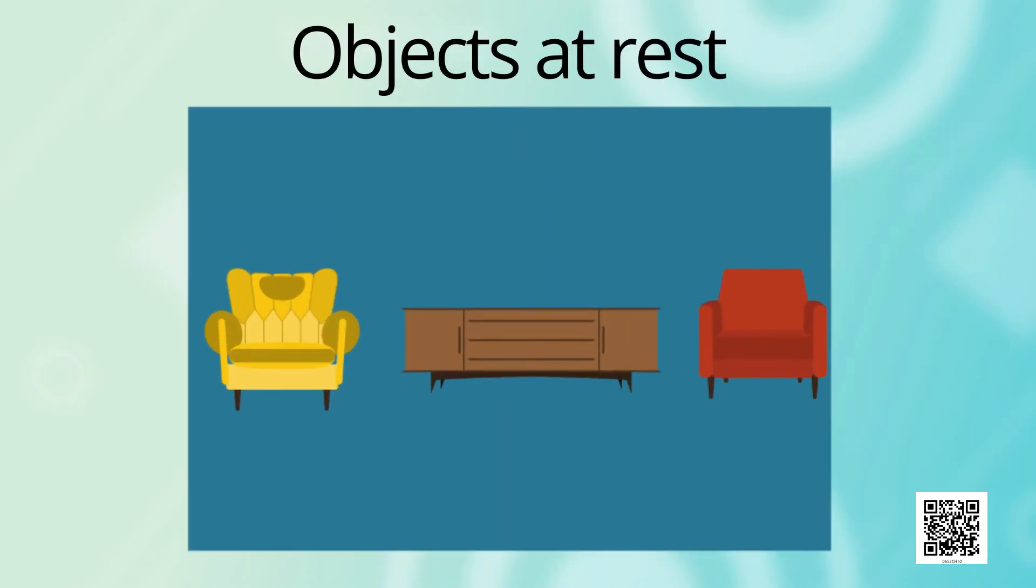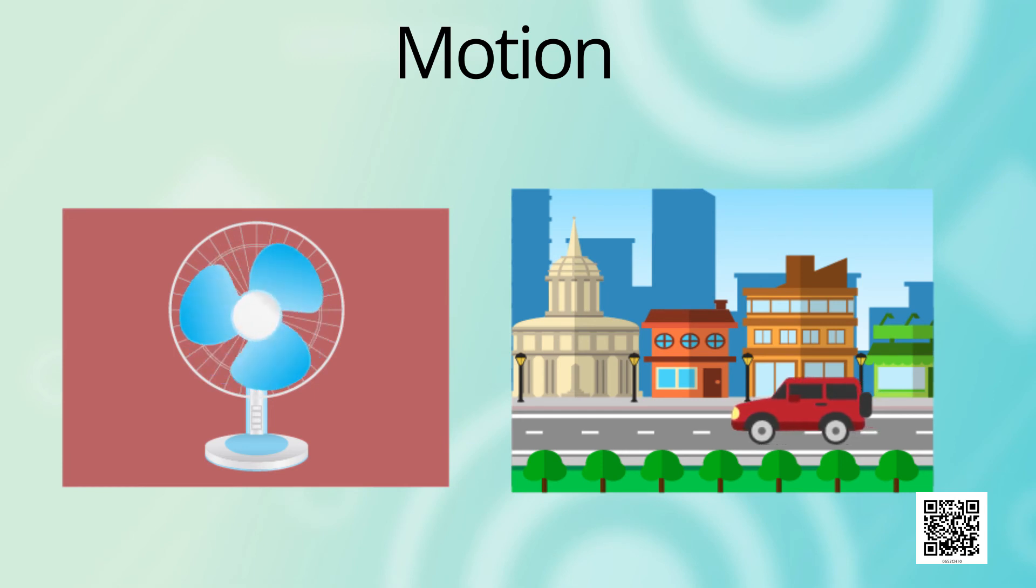Objects at rest. There are many objects around us. Some objects are in motion, whereas some objects are at rest. The objects you see here are some of the objects at rest. Now the objects which you see are the objects around us which are in motion.